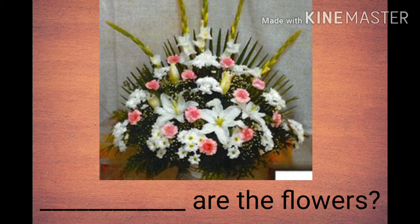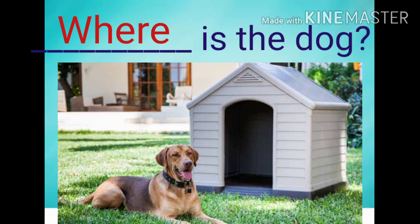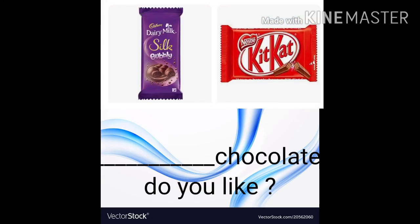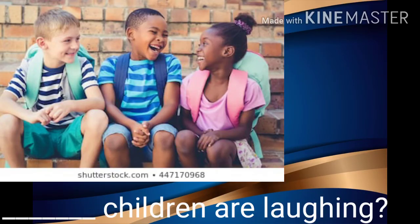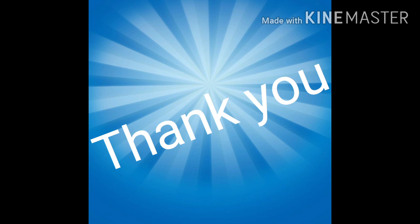Third: Dash are the flowers? — Answer: How are the flowers? Fourth: Dash is the dog? — Answer: Where is the dog? Fifth: Dash chocolate do you like? — Answer: Which chocolate do you like? Sixth: Dash children are laughing? — Answer: Why are the children laughing? So students, you have understood where to use different question words while framing the questions.